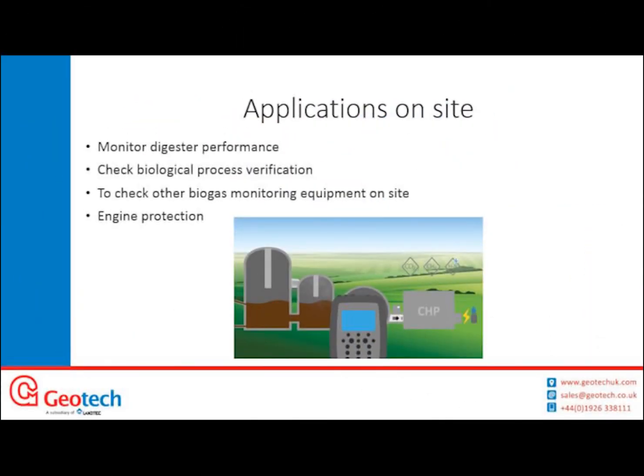So why would you use a Biogas 5000? The first main application is to monitor digester performance. The digester produces both a liquid phase and a gas phase, and the Biogas 5000 monitors the gas phase. From this you can gauge how well your biological process is working, see how calorific the gas you're producing is, and make sure the process is not going sour or producing unusable gas.